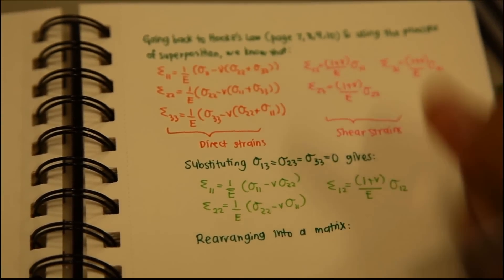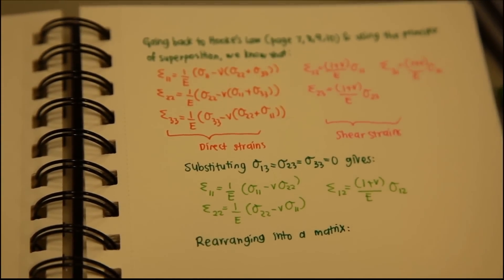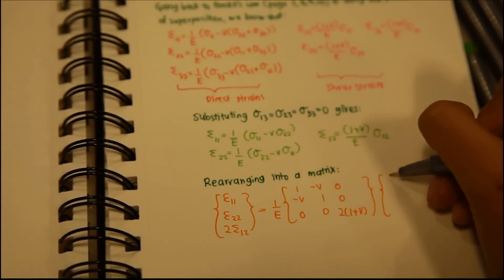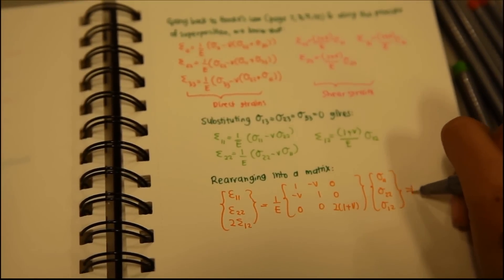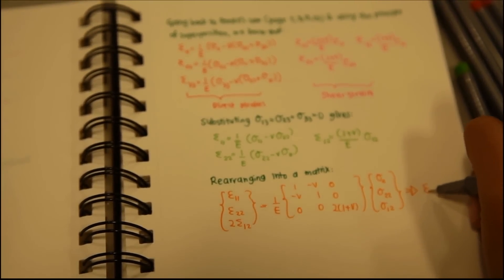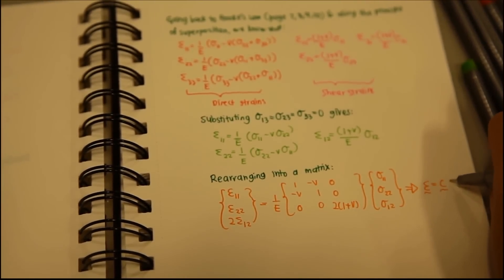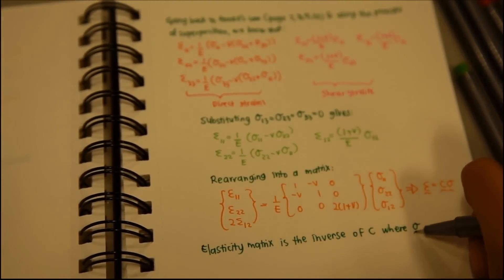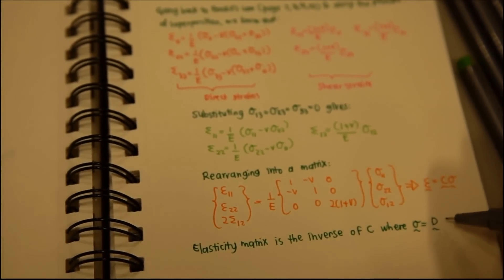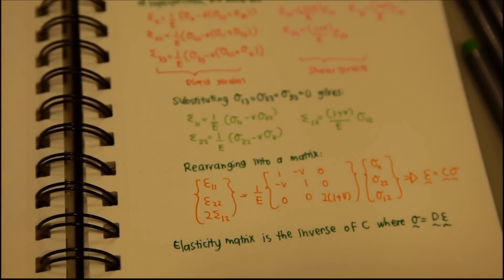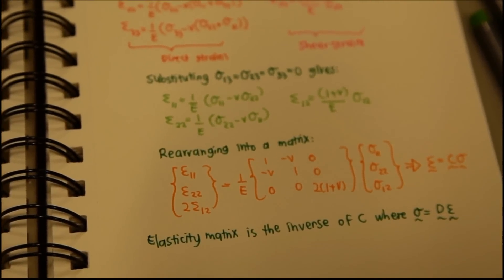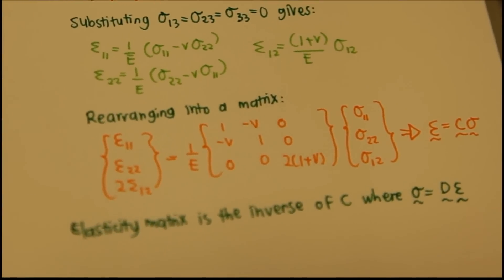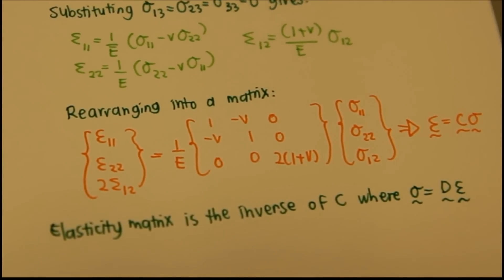Rearranging these equations in matrix form, we get a matrix showing that the strain matrix equals the compliance matrix times the stress matrix, and therefore the stress matrix equals the inverse of the compliance matrix times the strain matrix. Therefore, the inverse of the compliance matrix is the elasticity tensor matrix D.